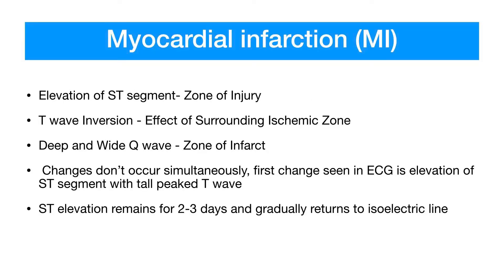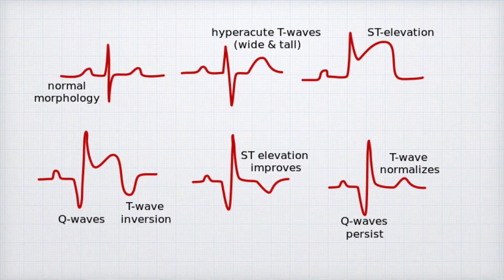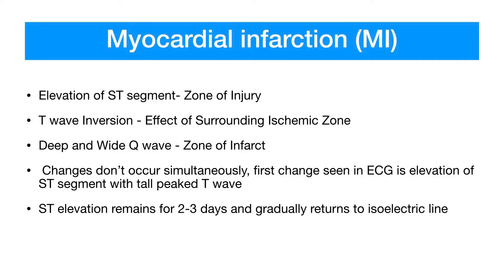Myocardial infarction produces three basic changes in leads facing the infarct wall: (1) elevation of the ST segment, indicating the zone of injury; (2) inversion of the T wave, indicating the effect of the surrounding ischemic zone; and (3) deep and wide Q waves, indicating the zone of infarct or dead muscle. These are the three basic ECG changes following acute myocardial infarction.